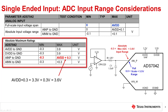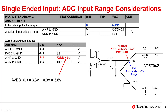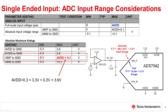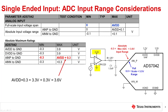The absolute maximum input range is the voltage range that can be safely applied to the data converter without damaging the device. Exceeding this range can cause damage. It is especially important to pay attention to this limit if the power supply of the amplifier exceeds the converter's full-scale range. In this example, the absolute maximum range at ANP is negative 0.3 volts to AVDD plus 0.3 volts. With AVDD equal to 3.3 volts, that is negative 0.3 volts to 3.6 volts. Since the amplifier supplies are 0 volts and 3.3 volts, the input is safe from electrical overstress.